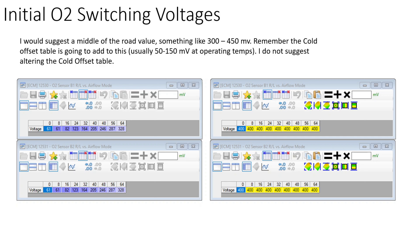Keep in mind this isn't the actual final switching voltage — there's another adder table, the cold offset table. I would say leave the cold offset table alone. At normal operating temperature around 190 to 200 degrees, it's going to be adding 50 to 100 millivolts. So in practice, a value of 400 is going to be 450 to maybe 500. The total range of the oxygen sensor is probably 100 millivolts at full lean to 800 to 900 millivolts at full rich, so you probably want to assume stoic is about 400 to 450.